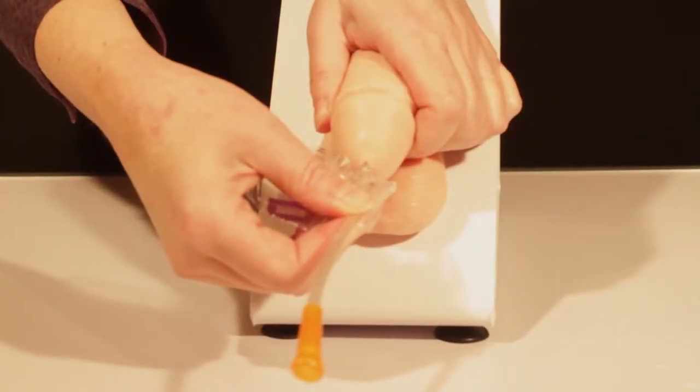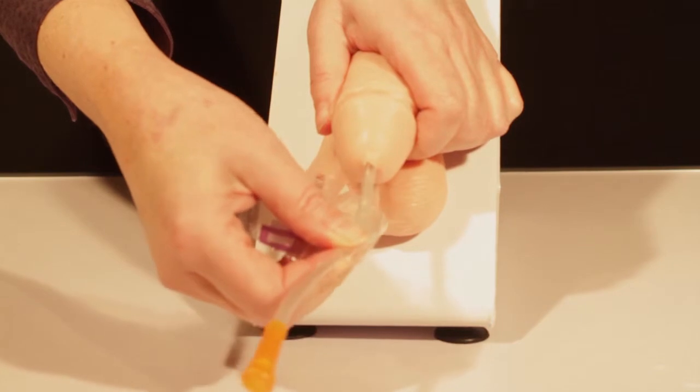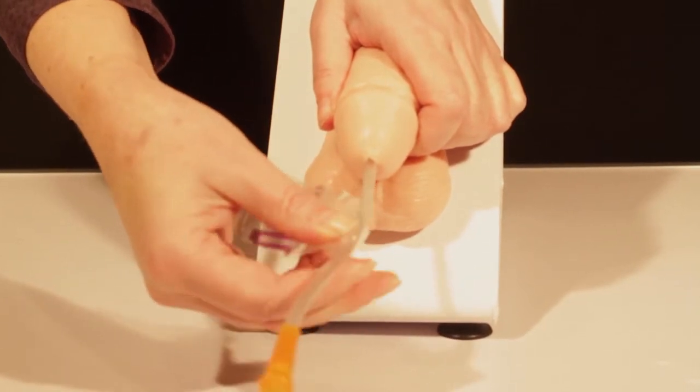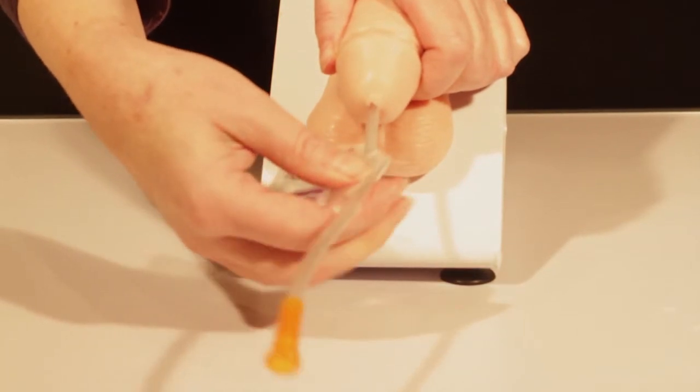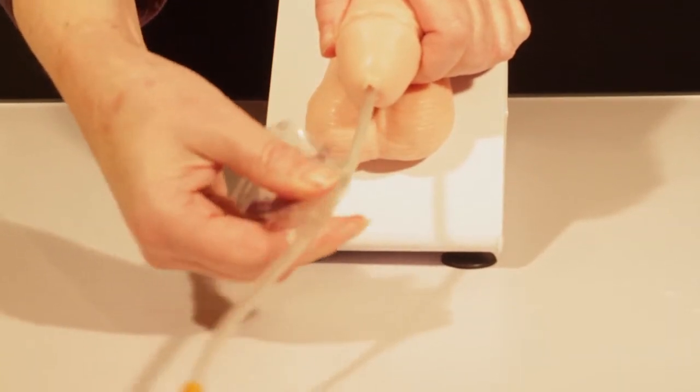When urine stops flowing, gently remove the catheter, stopping to allow more urine to drain if necessary. Whilst removing the catheter, gently rotate it to ease removal.